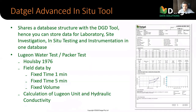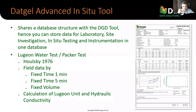The Advanced In Situ Tool currently does Packer test calculations or Luzon water test calculations, done to the Holsby 1976 method. It's being used by a couple of major consultants with varying types of geology, so we had to deal with variations of the fixed time and fixed volume approach, depending on how permeable the rock is. It calculates a Luzon value and hydraulic conductivity as the final answer. There are options for interactive interpretation — you need to decide the flow type, and you can override the results that get reported if you want to.